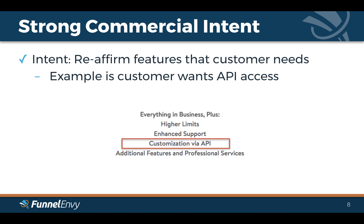One thing you can do to help people get across the line is highlight the specific features they might be interested in. So if your sales team knows that a potential customer wants API integrations, you're going to highlight that feature. Right now it's at the bottom of the pricing page — you're going to pull that up and maybe even mention the specific integrations that a particular account is interested in.